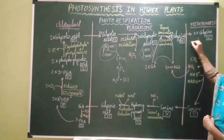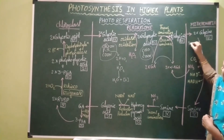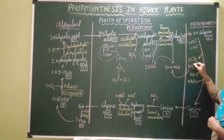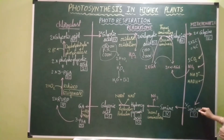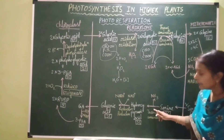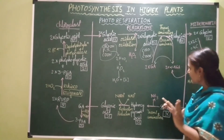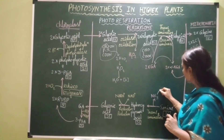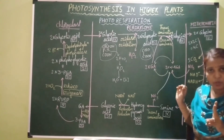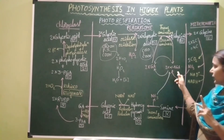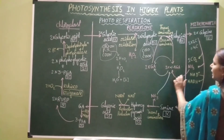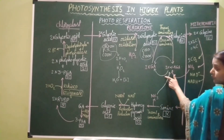Serine leaves the mitochondrion and enters the peroxisome. Inside the peroxisome, serine undergoes deamination by the enzyme deaminase. The released ammonia is transferred onto alpha-ketoglutaric acid, converting another alpha-ketoglutaric acid back into glutamic acid. So both molecules of glutamic acid — which were converted to alpha-ketoglutaric acid by donating amino groups to glyoxylic acid — are regenerated: one by receiving ammonia from the mitochondrion and one from the peroxisome.